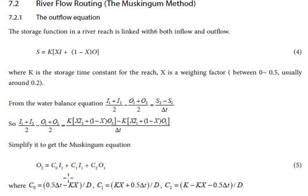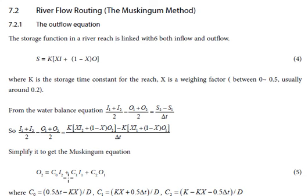So here comes the Muskingum method. The storage function in a river reach is linked with both inflow and outflow. S is equal to K times x into inflow plus 1 minus x into outflow.